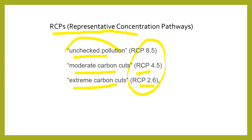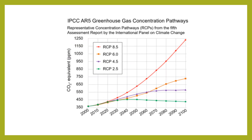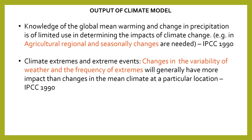The latest scenarios used in the next assessment report are called RCPs — Representative Concentration Pathways. RCP 8.5 means unchecked pollution, RCP 4.5 means moderate carbon cuts, and RCP 2.6 means extreme carbon cuts. The most important thing is that knowledge of global mean warming and mean changes in precipitation is of limited use — we must focus on climate extreme changes, the variability of weather and the frequency of extremes, as these have more impact than changes in the mean.